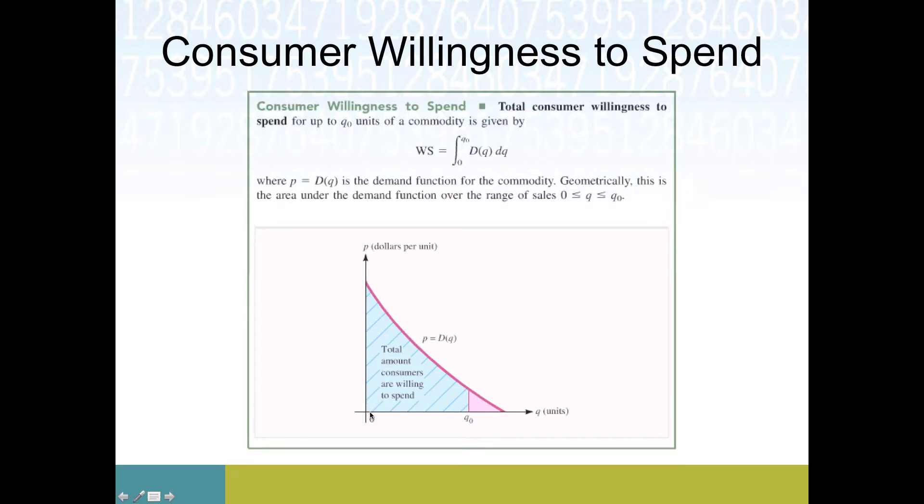If we fix the quantity that we want the market to sell, consumer willingness to spend is essentially the area underneath the demand curve up to that quantity. So it is precisely this shaded region and it's a quantity because if you take dollars per unit and you multiply by units, you get dollars. So this is the dollar value of what consumers are willing to buy.